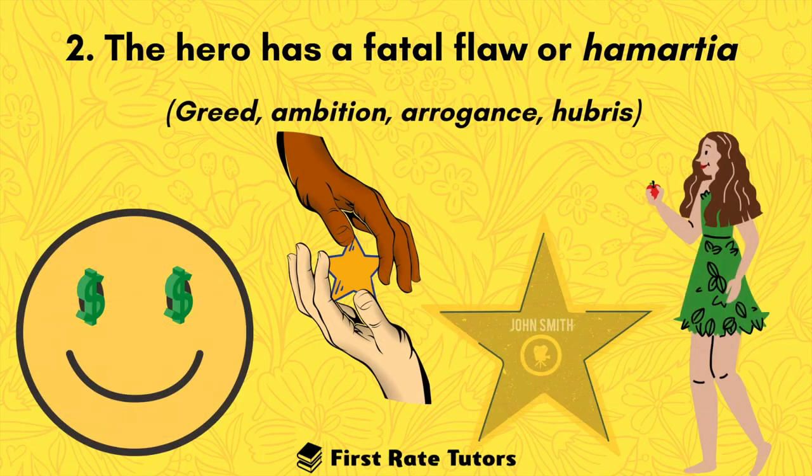This hero has what we call hamartia, which is a fatal flaw. For instance, this hero could be greedy, they could be ambitious, they could have arrogance, or they could have hubris.